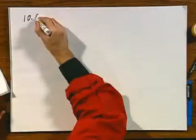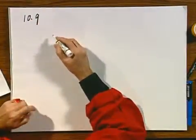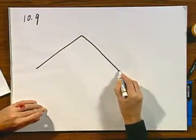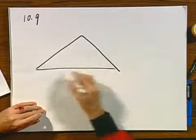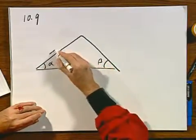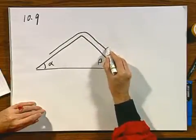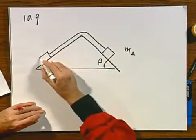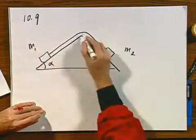So let's now go to problem 10.9. This is a classic. I have here an angle alpha and here an angle beta. A rope. And here I have a mass M2. And here I have a mass M1. And here I have a pulley.